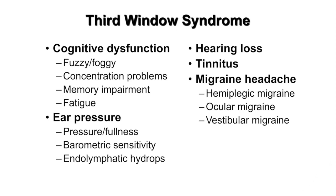Third window syndrome patients can also experience cognitive dysfunction — feeling fuzzy, foggy, spacey, out of it, with poor memory, reduced concentration, and easy fatigue. They feel ear pressure, which is a consequence of endolymphatic hydrops, a fluid buildup in the central compartment of the inner ear. While this is common in many third window syndrome sites, it is uncommon in patients with cochleofacial dehiscence. They can also have pseudo-conductive hearing loss, tinnitus, and migraine headaches including hemiplegic, ocular, and vestibular migraine.